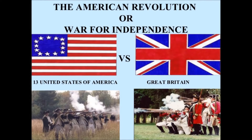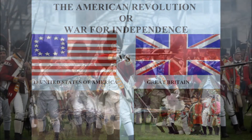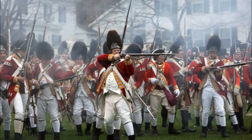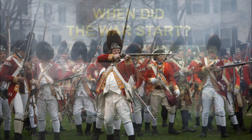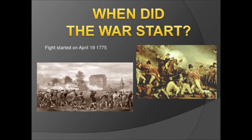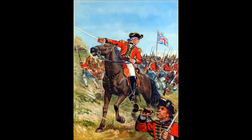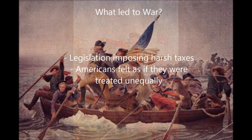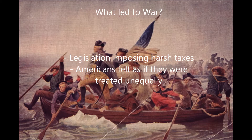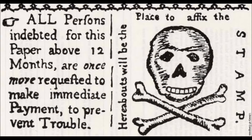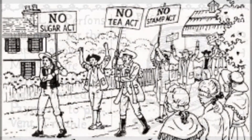The American Revolution was a political upheaval by the 13 colonies in America against the British monarchy. Fighting started in 1775, however the atmosphere of revolution existed during 1765 and ended in 1783. Laws such as the Stamp Act, Sugar Act, and other taxes were imposed by the British to pay for the debt caused by the war against the French. The Americans considered these taxes as harsh and unfair.